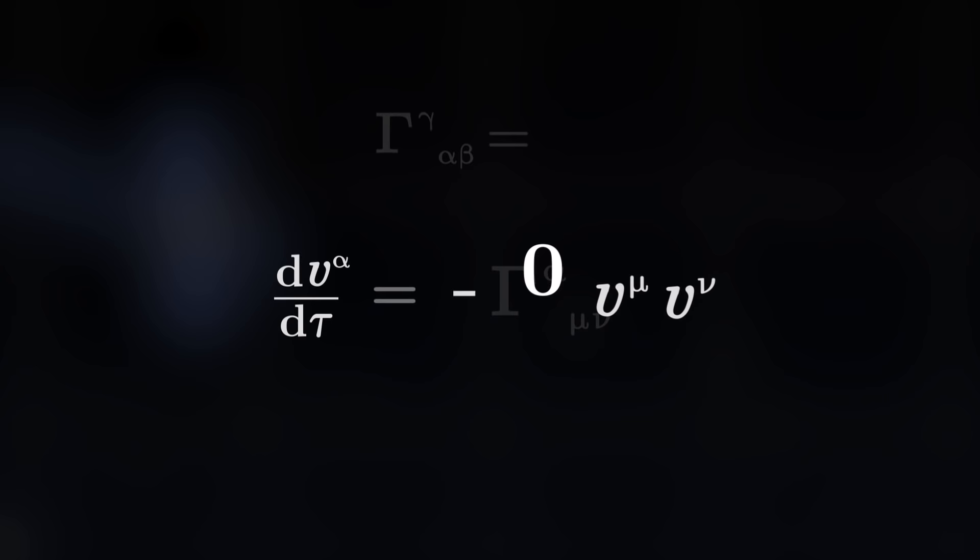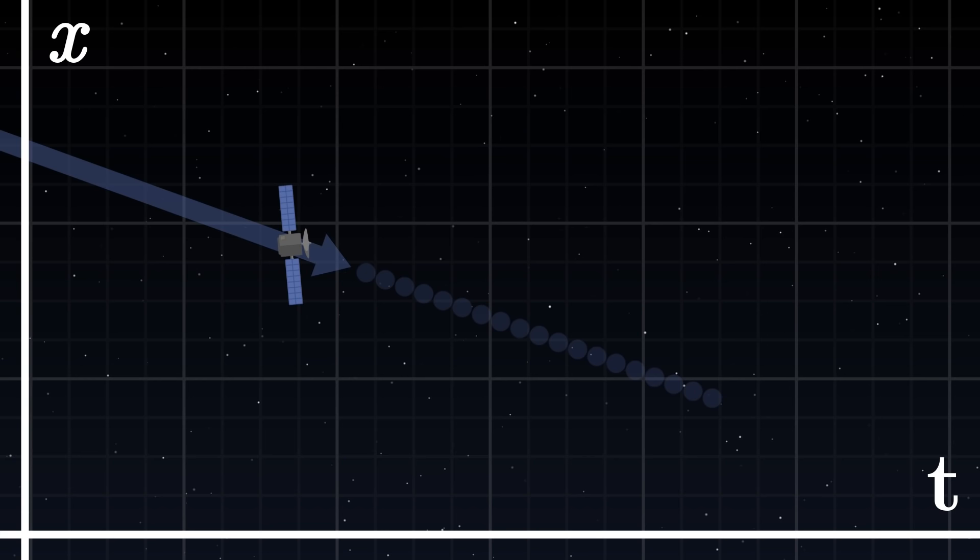Injecting them in the geodesic equation, this simply tells us that the components of the velocity of the satellite do not vary. The satellite traces a straight line through our coordinates.